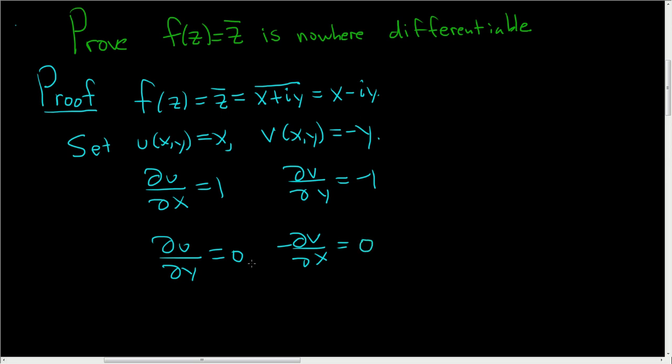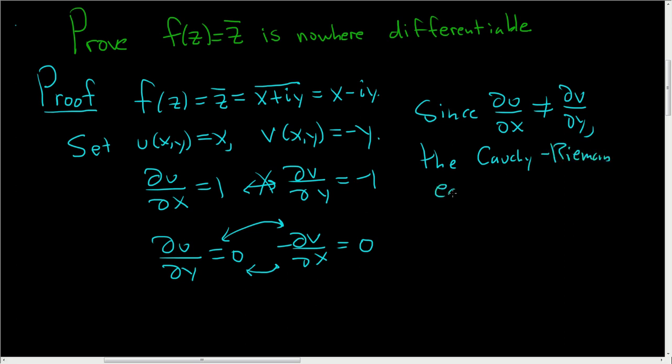So these are equal, but for the Cauchy-Riemann equations to hold, these have to be the same, and these have to be the same. So it's not going to work here because these are not the same. So since del u del x is not equal to del v del y, the Cauchy-Riemann equations do not hold. So they completely fail. Those equations do not hold.